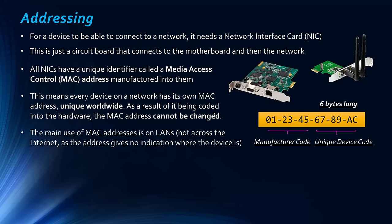The main use of MAC addresses is on local area networks, not across the internet. MAC addresses aren't used to send data across the internet because the address gives no indication of where the device is. IP addresses, by contrast, can indicate where a device is located in the world, helping routers know where to send packets. A device manufactured in China and shipped to America or Russia gives no location clue through its MAC address — they're only really useful on LANs.